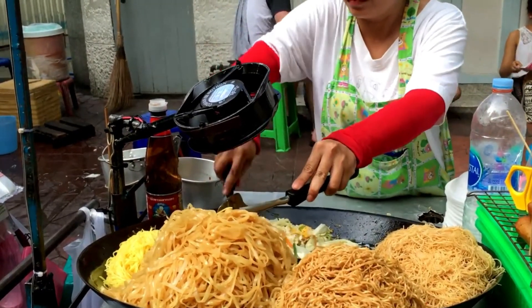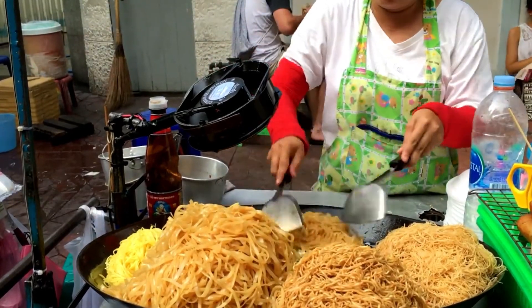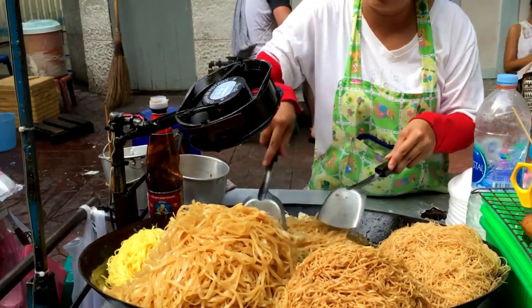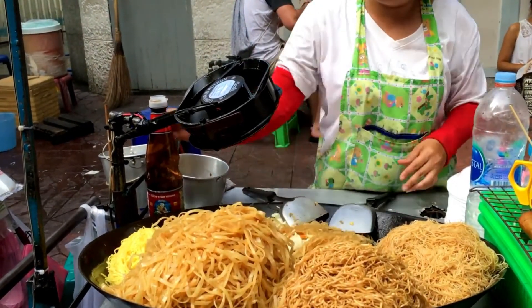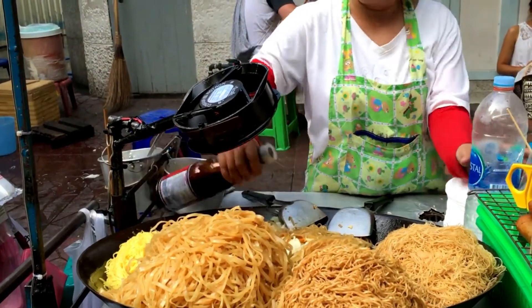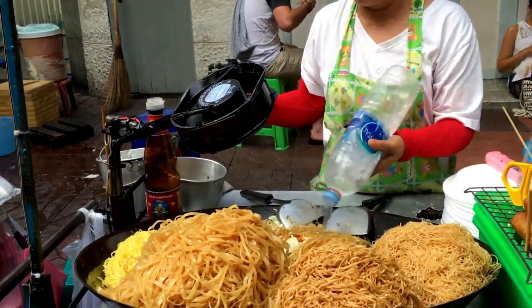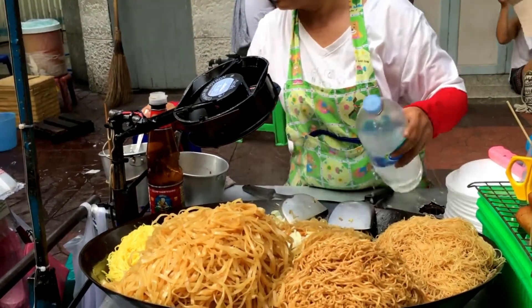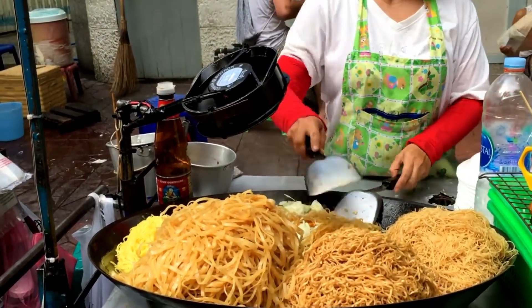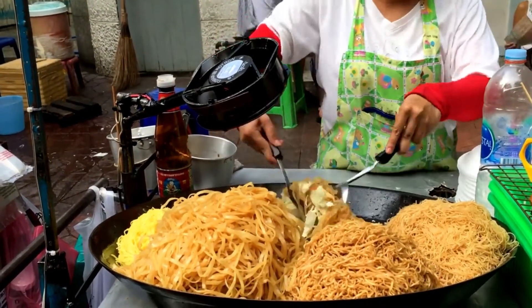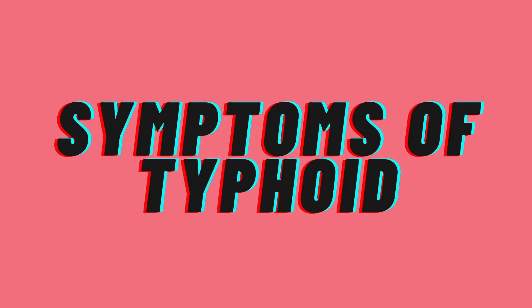Food can be contaminated by poor hand hygiene or flies. Street food is a common cause. Vegetables grown in contaminated water may also cause typhoid. Countries with poor access to clean drinking water suffer a lot.